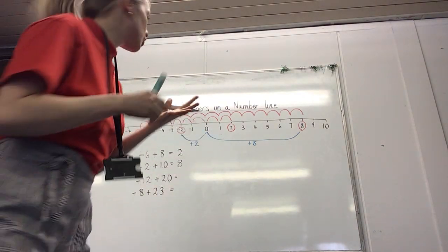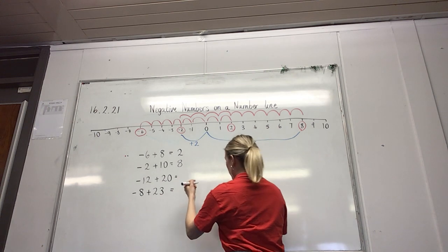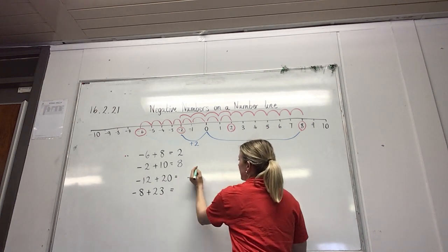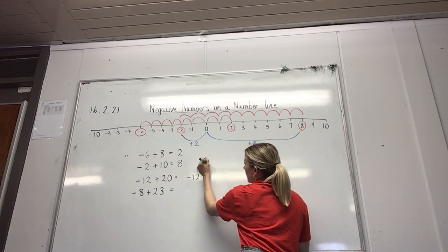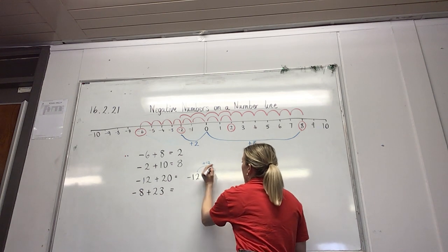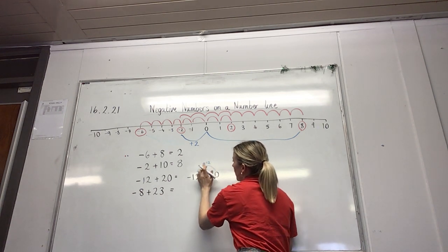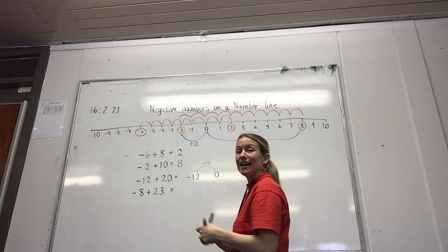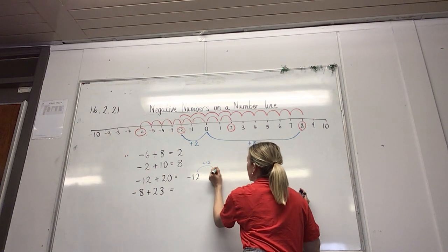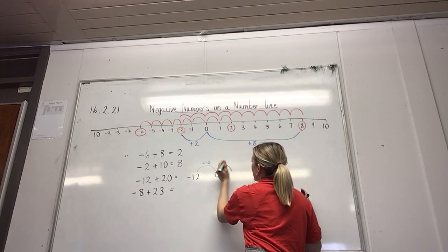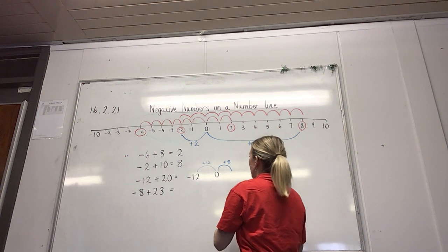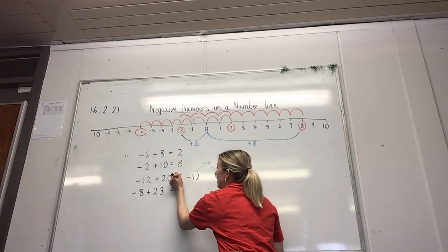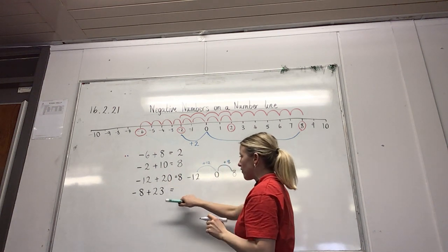So minus 12 add 20. Well, I need to add on 12. So if I've got minus 12 here, for example, I can add on 12 to get me back to 0. So if I add 12, that takes me to 0. But I don't only want to add 12, I want to add 20. So if I've already added 12, how many more do I need? I need to add 8 more to be adding 20. So add on 8 to 0, and my answer is 8. Minus 12 add 20 gives me 8.